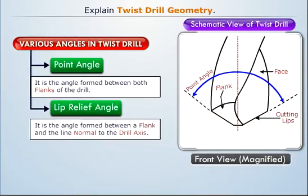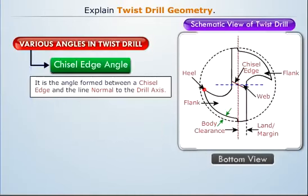Lip relief angle is the angle formed between a flank and the line normal to the drill axis. Chisel edge angle is the angle formed between the chisel edge and the line normal to the drill axis.